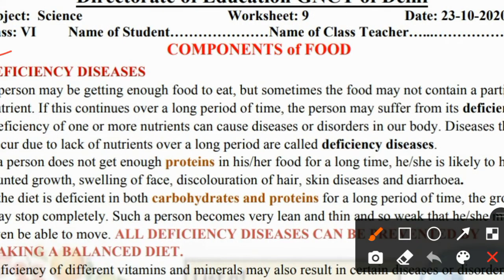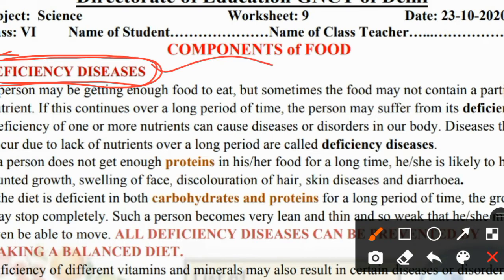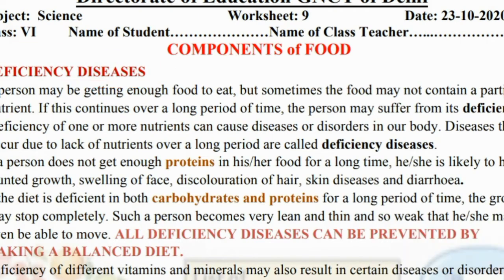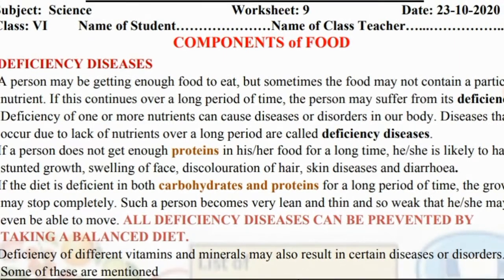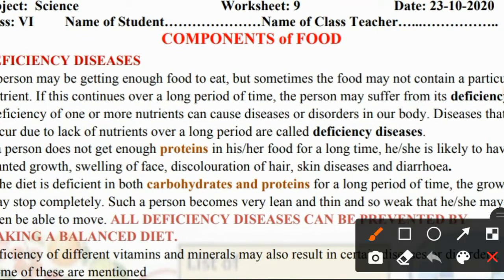Today we will study Deficiency Diseases. Deficiency Diseases — disease means disease, and deficiency means some kind of decrease. If we don't have any component or nutrient in our food, then what will happen? It will become a disease. We call it deficiency disease.